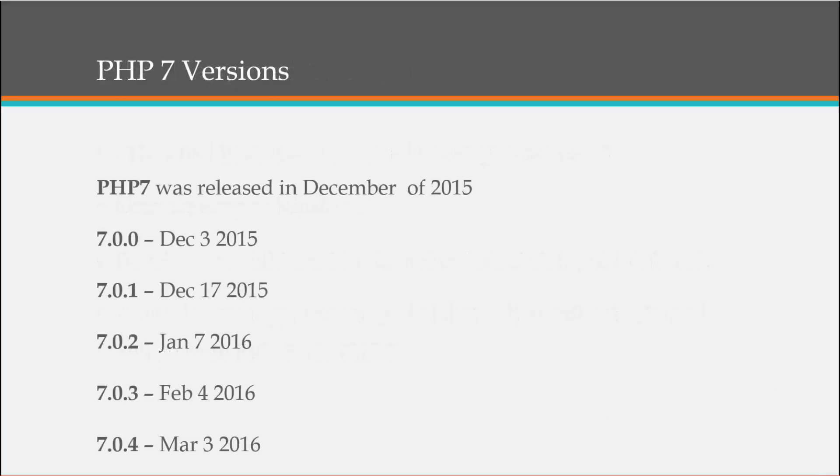PHP 7 version 7.0.0 was released on December 3rd, 2015. 7.0.1 was December 17th, 2015. Version 7.0.2 was January 7th, 7.0.3 was February 4th, and then 7.0.4 — the latest version at the time — in March of 2016. In this course we'll be working with 7.0.4.